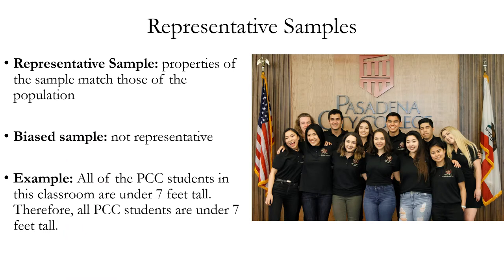Representative samples are samples that are not biased — the pattern of properties of the sample matches those of the whole population. That's the opposite of a biased sample. Example: all of the PCC students in this classroom are under 7 feet tall; therefore, all PCC students are under 7 feet tall. There's no particular reason to believe that this group of students is biased towards shortness, so they're probably a representative sample of the student population as a whole.